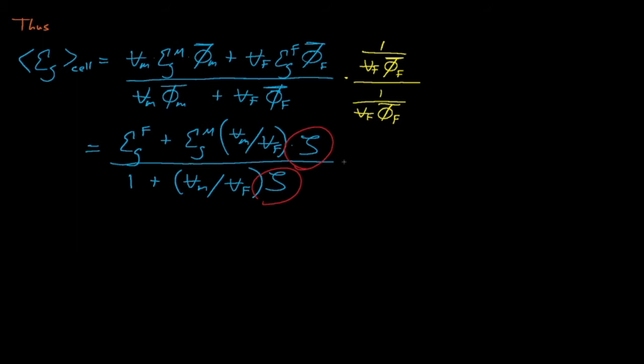which now contains the cell disadvantage factor. So in summary, if we know the disadvantage factor, then we know how to combine the fuel and moderator cross-sections to obtain a representative average cross-section for the homogenized cell. We can obtain estimates for the fuel and moderator cross-sections using infinite medium calculations, and we can very easily obtain the volumes for the fuel and moderator regions. So if we can compute our cell disadvantage factor,